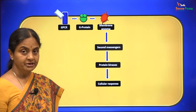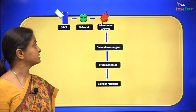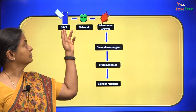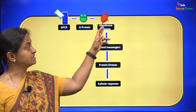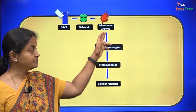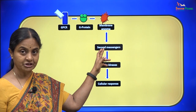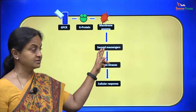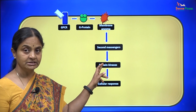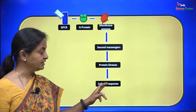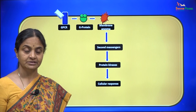The components of the second messenger signalling pathways are the G-protein coupled receptor, G-proteins, a set of membrane enzymes, second messengers per se which are soluble molecules within the cytoplasm, and protein kinases which finally phosphorylate target proteins to bring about cellular responses.